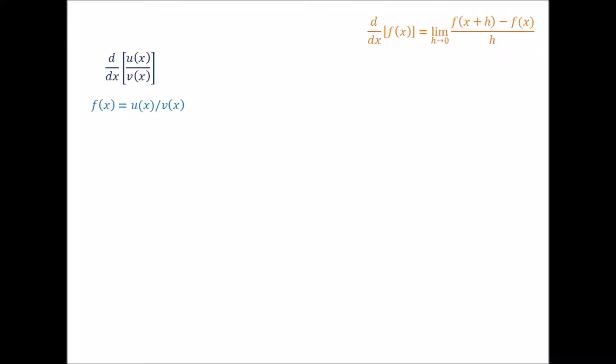So we start off by writing our derivative. The first thing we want to do is apply the limit definition, which states that the derivative of a function f of x with respect to x is equal to the limit as h approaches 0 of f of x plus h minus f of x, all over h. Applying this and letting f of x be u of x over v of x, and f of x plus h be u of x plus h over v of x plus h, and plugging back into the limit definition, we then get the following.